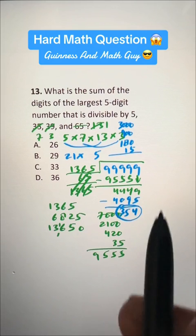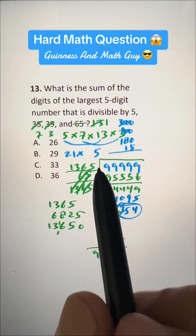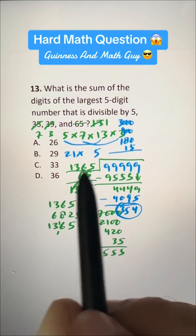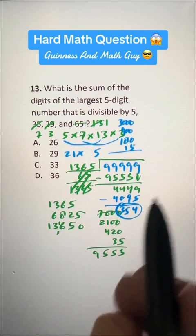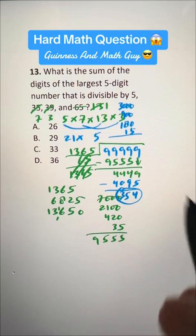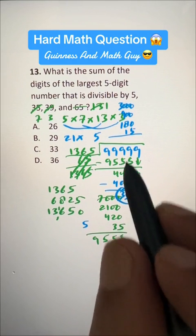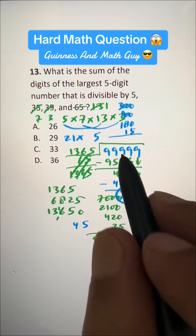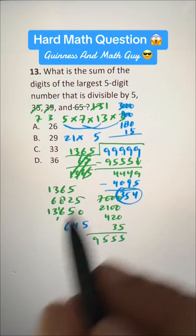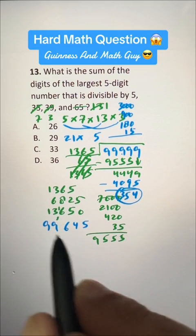and we'll get that largest 5-digit number that is divisible by this. So, 9, 4 from 9 is 5, and 5 from 9 is 4, then 3 from 9 is 6, and we have 99, but this is not the answer.